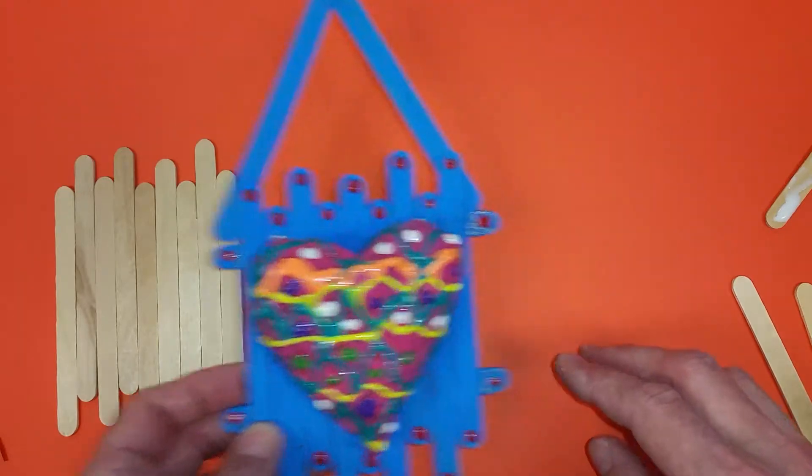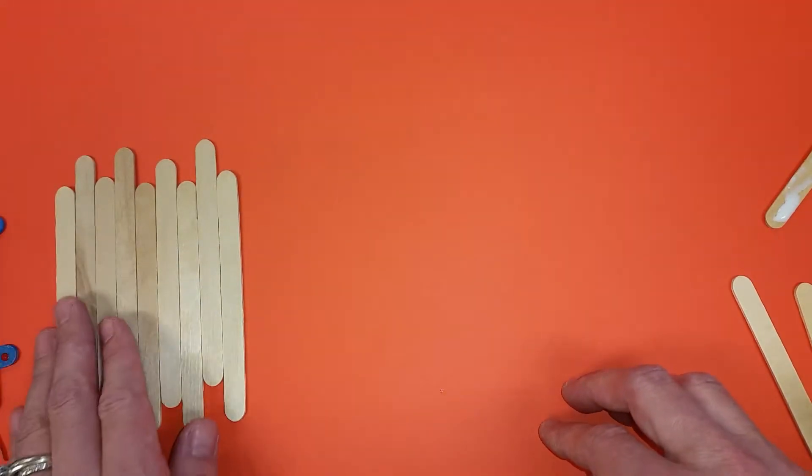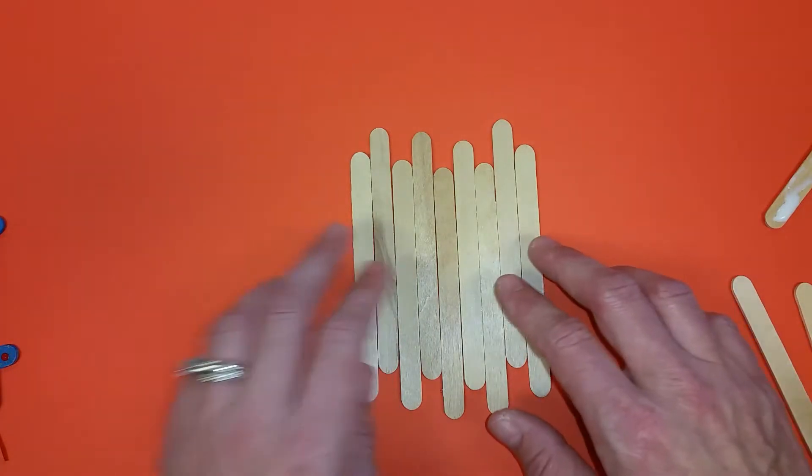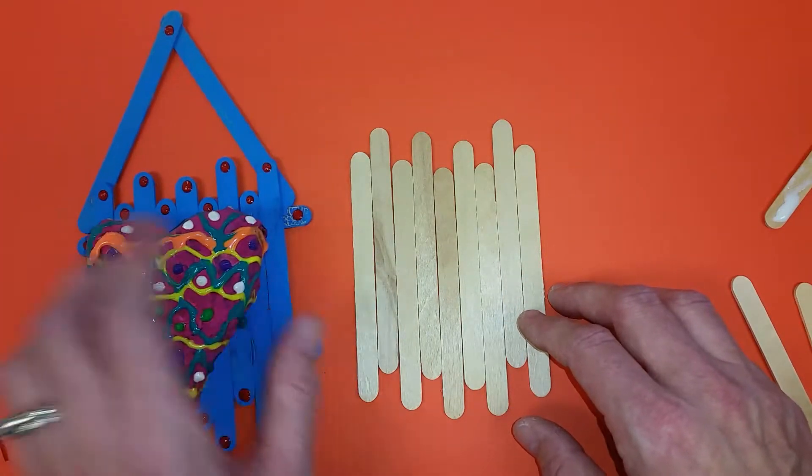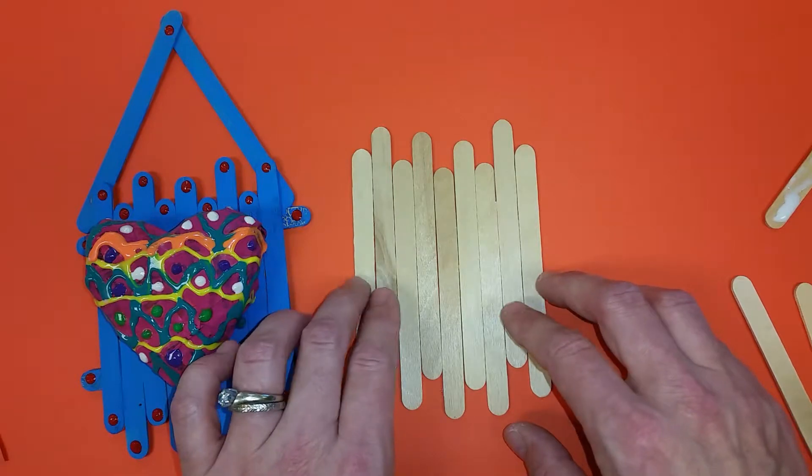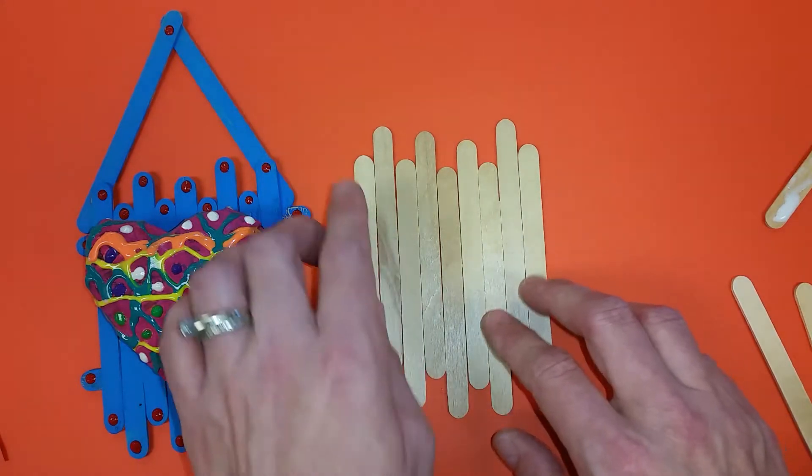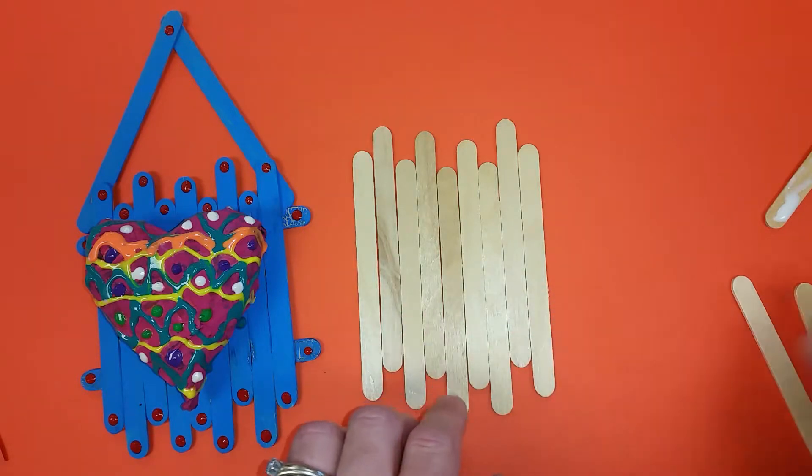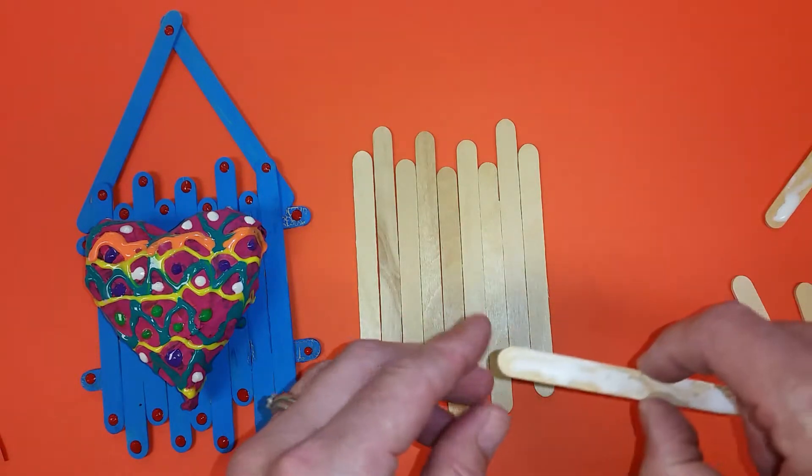So what you need to do is go to the store or the basket and get 13 craft sticks, and then you're going to lay them out one beside the other. What I like to do is kind of stagger mine. You can line them all up the same if you would like, it's completely up to you.